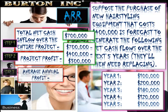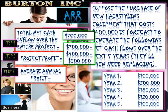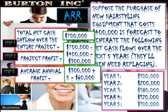Our third step is calculating the average annual profit. The project profit is $300,000 running over five years, so we divide $300,000 by five. That gives us $60,000 as the average annual profit — so $60,000 on average per year is what this investment is returning.